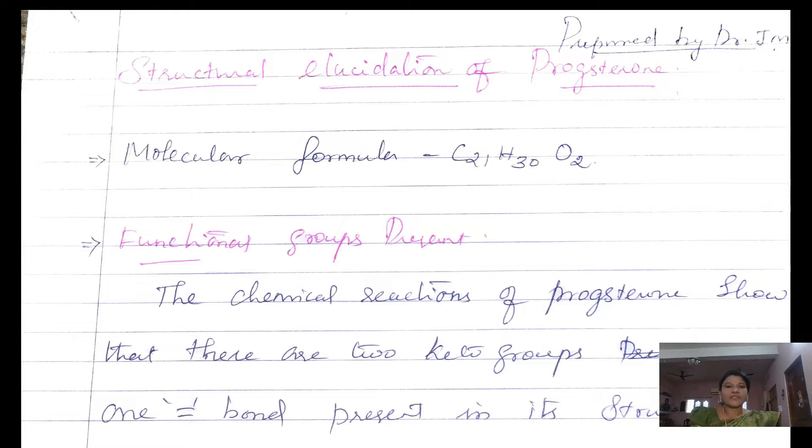By the usual test in any structural elucidation of a new compound, the molecular formula is the first step. Through the usual test, the molecular formula of progesterone is predicted as C21H30O2. Here it possesses 21 carbon atoms, 30 hydrogen atoms, and 2 oxygen atoms.